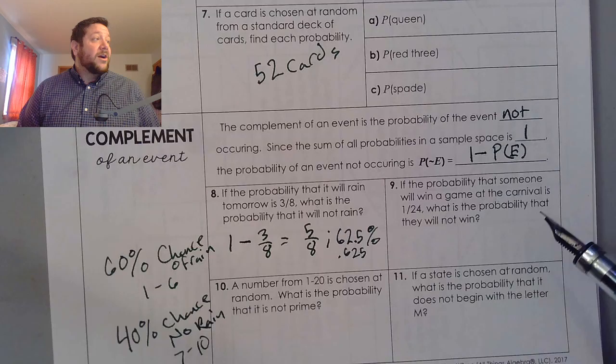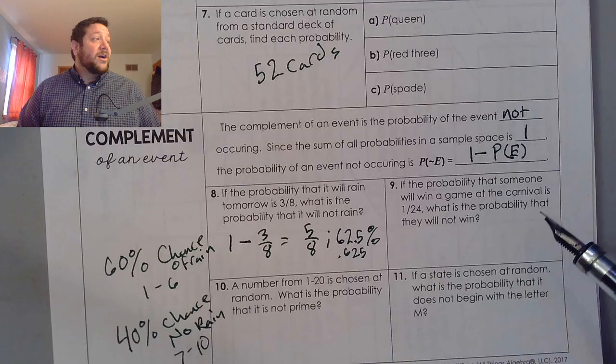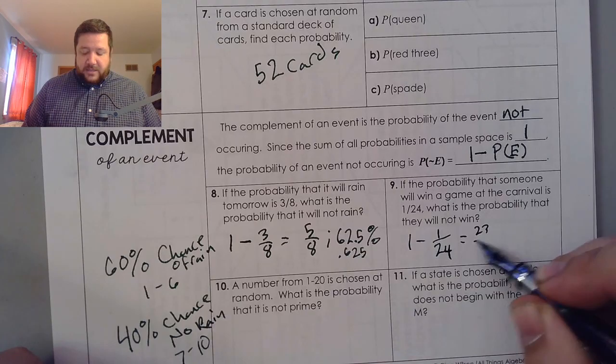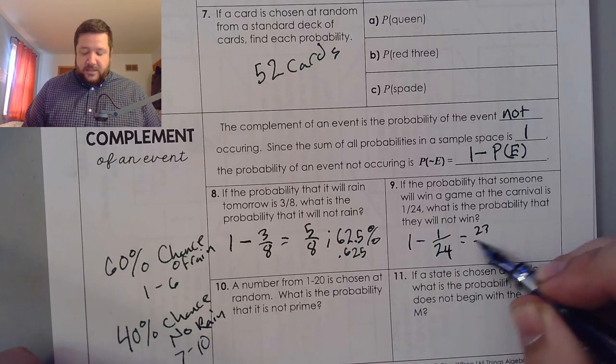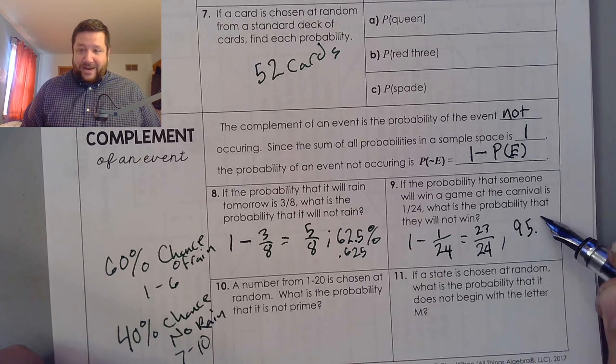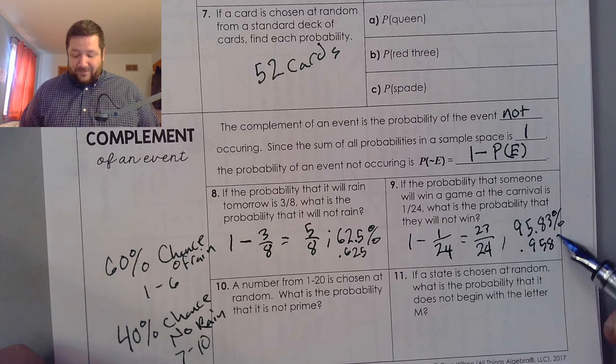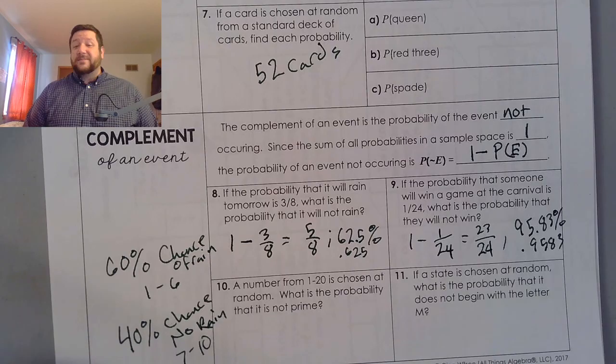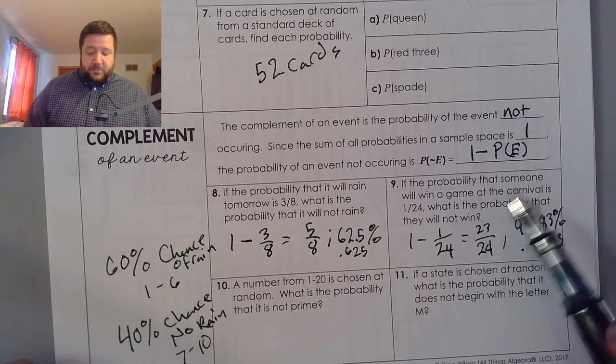Let's look at a couple others of these. So, probability that someone will win a game at the carnival is one in 24. What's the probability they're not going to win? Well, we're going to take one minus one in 24 which is going to give us 23 and 24 and if you write that as a percent that's going to be 95.83 percent or 0.9583. I wouldn't play that carnival game. So to find the complement we're going to subtract one minus the probability of the event occurring and the complement is the probability of the event is not happening.